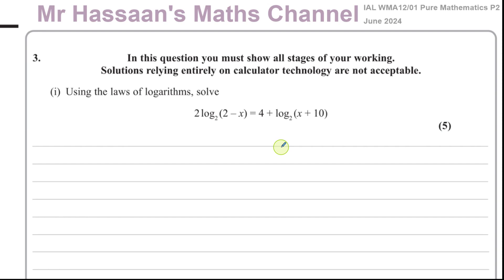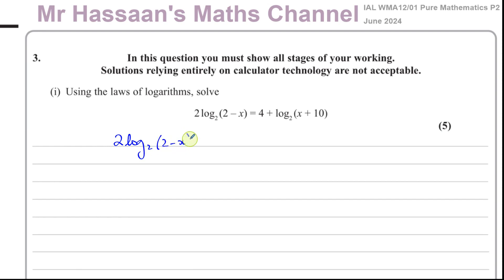It says here, using the laws of logarithms, solve this equation: 2 log base 2 of (2 minus x) equals 4 plus log base 2 of (x plus 10). When we are solving a log equation, we have to try to bring all the log terms on one side and the normal terms on the other side. So I'm going to first write this as 2 times log base 2 of (2 minus x) minus log base 2 of (x plus 10) equals 4.